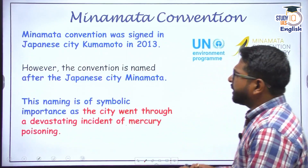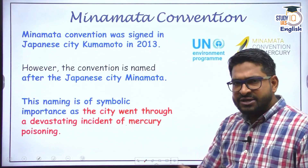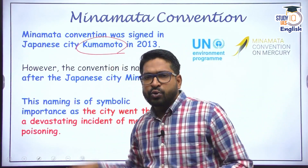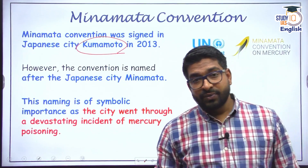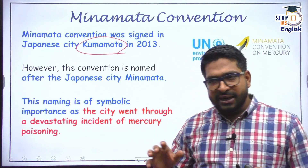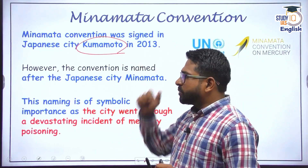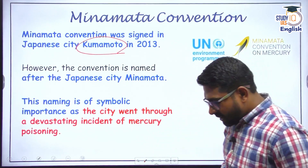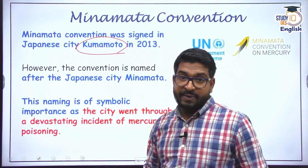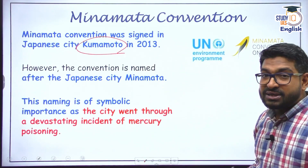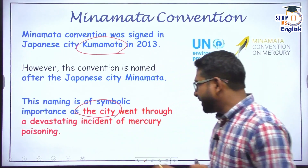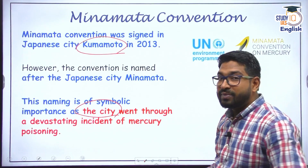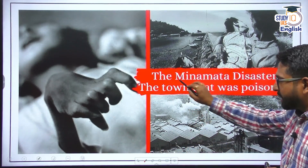Why the name Minamata? Minamata is a coastal city in Kumamoto prefecture with a very sad history connected to the Minamata Bay. The city went through a devastating incident of mercury poisoning during the 1950s, 60s, and 70s — that is why the name Minamata. Let us first understand the Minamata disaster, and then we will talk about the convention and the conference of parties.